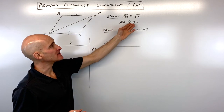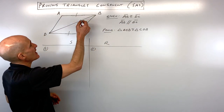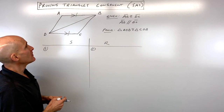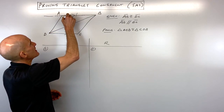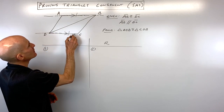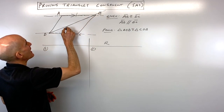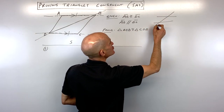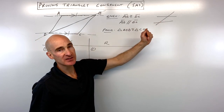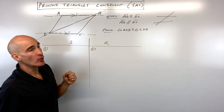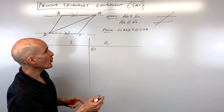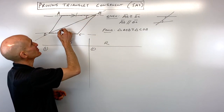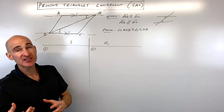The second given is that AB is parallel to DC, so I draw a little arrow to show that those two sides are parallel. I also like to extend those lines a little bit so that this diagonal acts like a transversal. What should jump out at you now is the diagram of two parallel lines cut by a transversal, which you learned about earlier in geometry. From that we know that this angle and this angle are congruent by alternate interior angles.